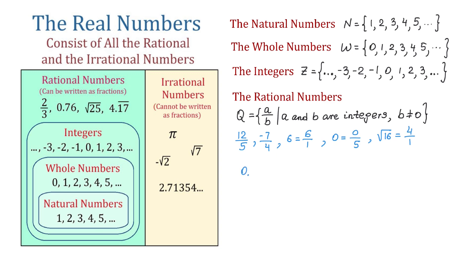0.26 is rational because we can write it as 26 over 100, or if we reduce it, this will be 13 over 50. So any terminating decimal is a rational number. 0.3 repeating is rational because we can write it as 1 over 3.